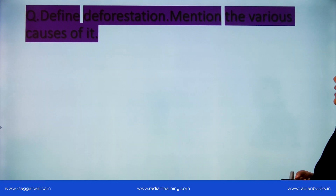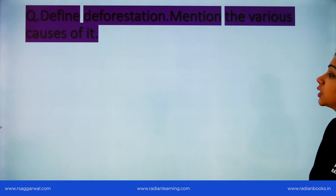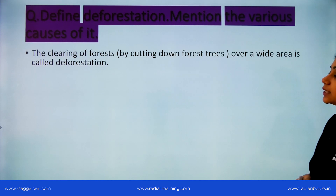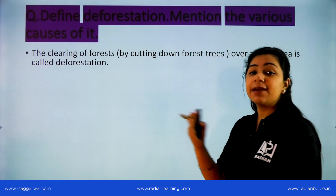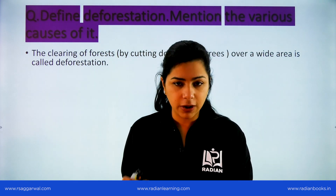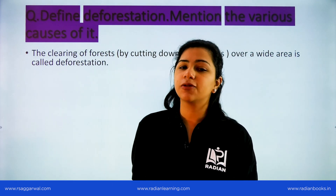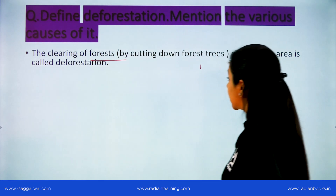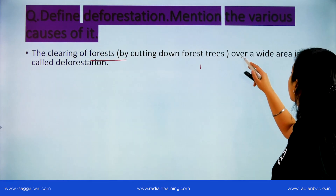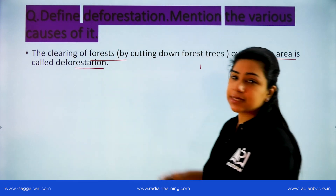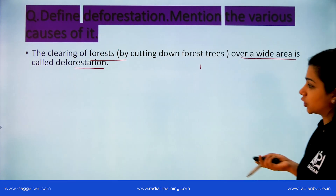Define deforestation and mention its various causes. Deforestation means removal — the removal of forests or cutting down of trees. So the clearing of forests by cutting down trees over a wide area is called deforestation.